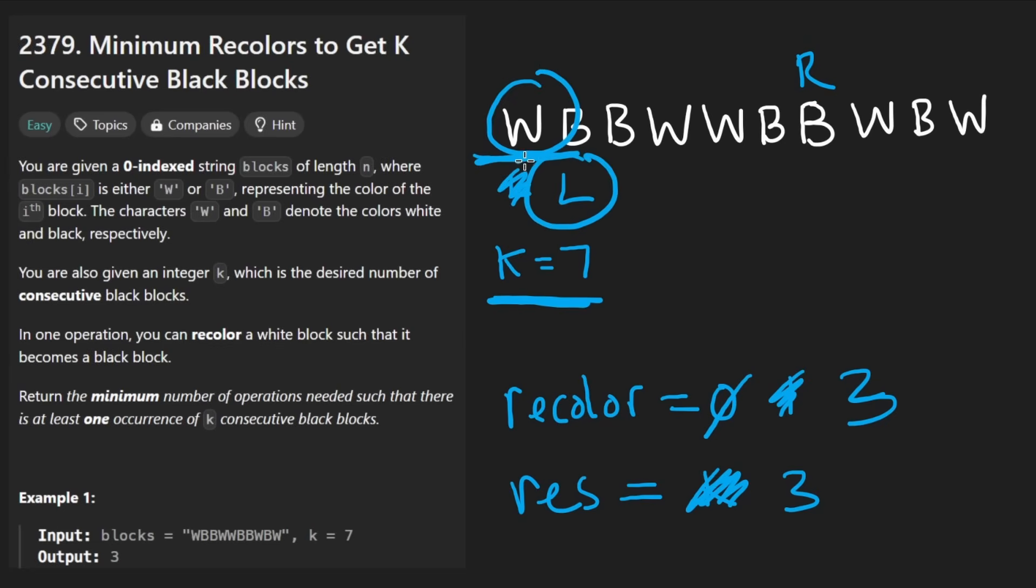So let's shift the left pointer. And if the character at the left pointer before we shifted it was white, well then we just removed a white from our window, so we can decrement the number of recolors. So now it's going to be down to two. But after we increment the right pointer, it's going to be over here, it's white. We have to increment recolors. It's going to be three now.